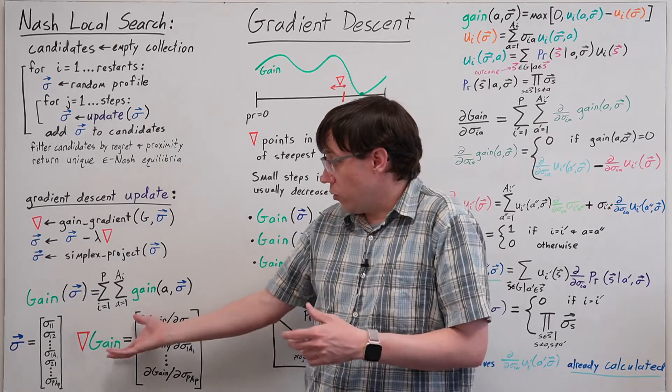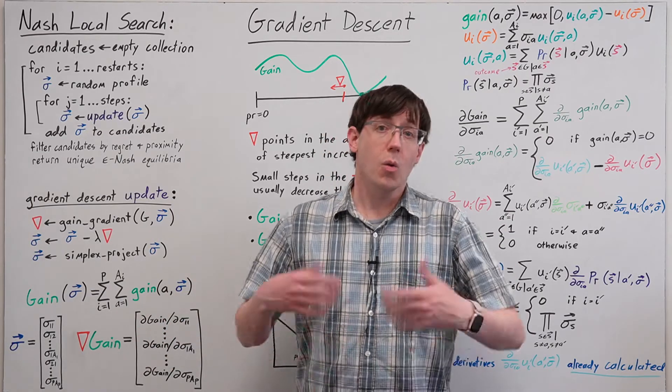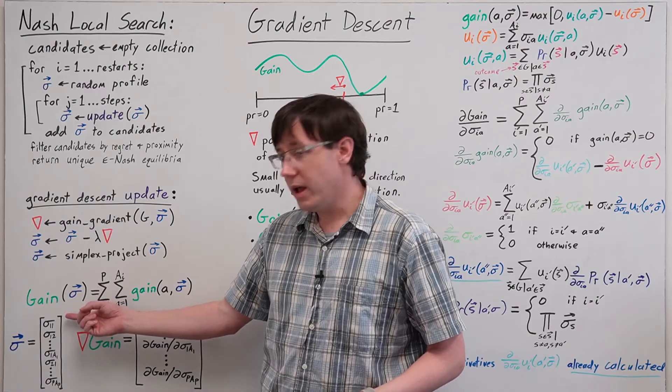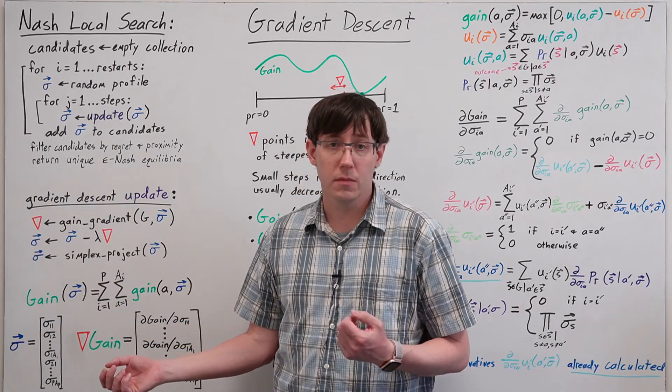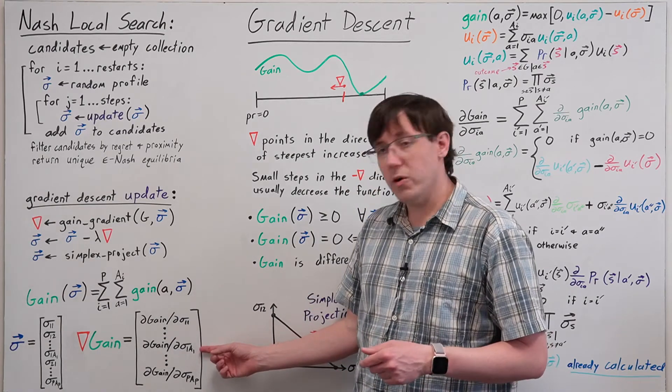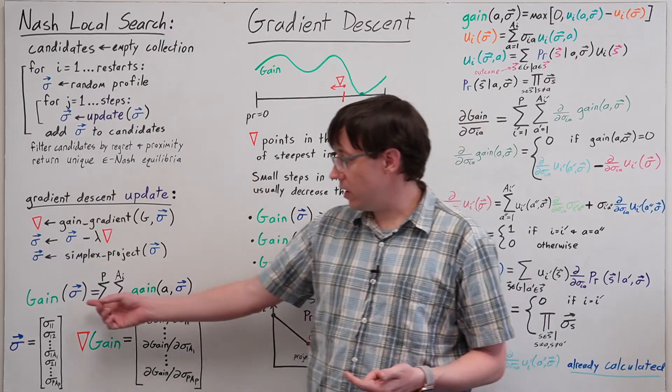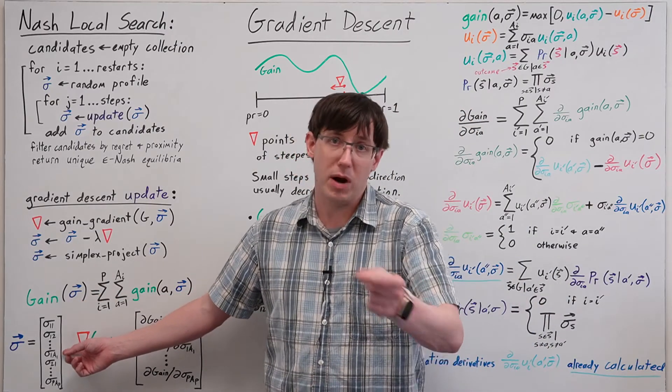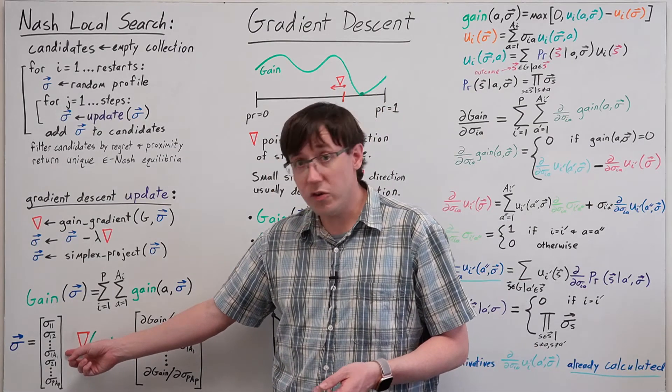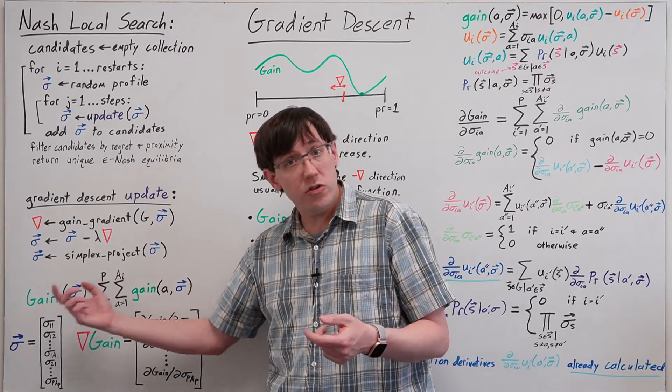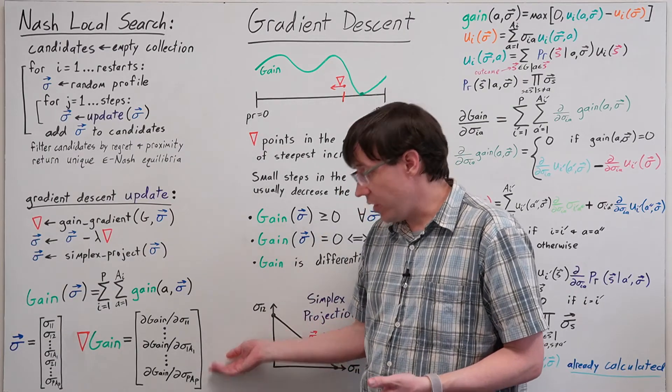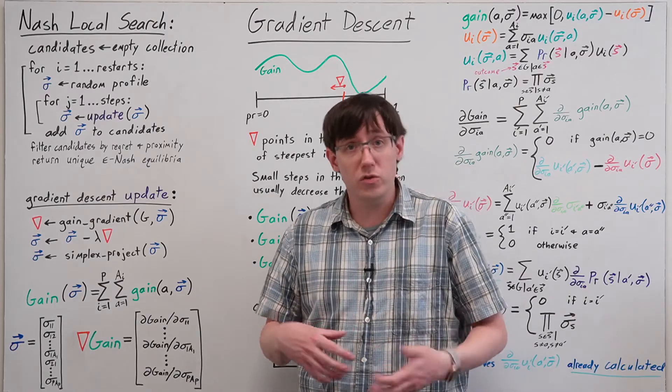What does the gradient of total gain look like? The input to the gain function is a profile specifying a probability for every action of every player. The gradient is a vector of the same dimension as that input, where each entry is the partial derivative of the gain with respect to that probability. This partial derivative tells us how much a small change in a particular probability would change the sum of gains. If we can calculate these partial derivatives, we can assemble them all into a gradient vector to perform gradient descent.